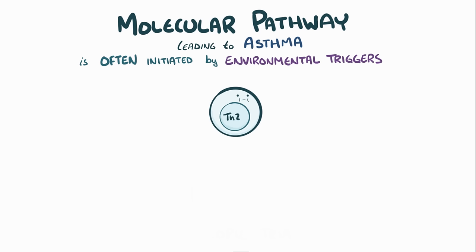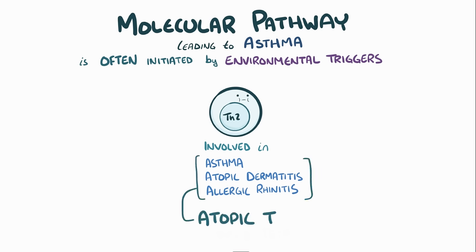Th2 cells are an immune cell subtype which are known to be involved in asthma, as well as atopic dermatitis and allergic rhinitis, making up what's called the atopic triad.